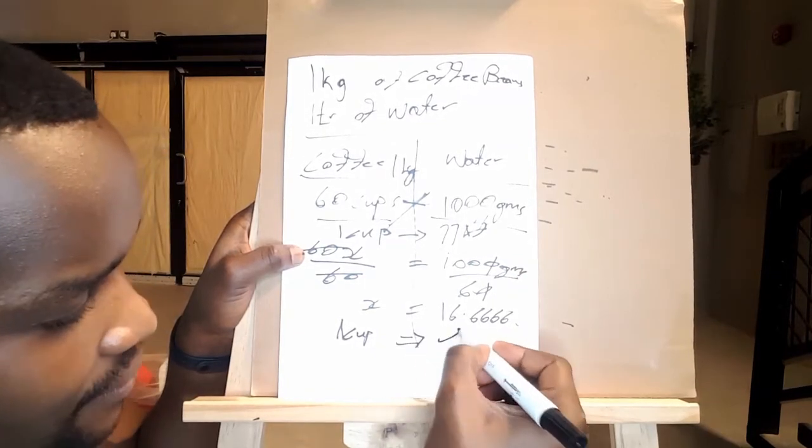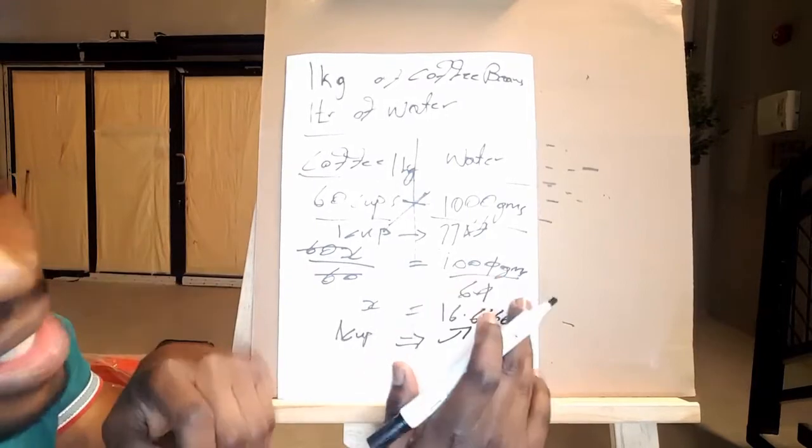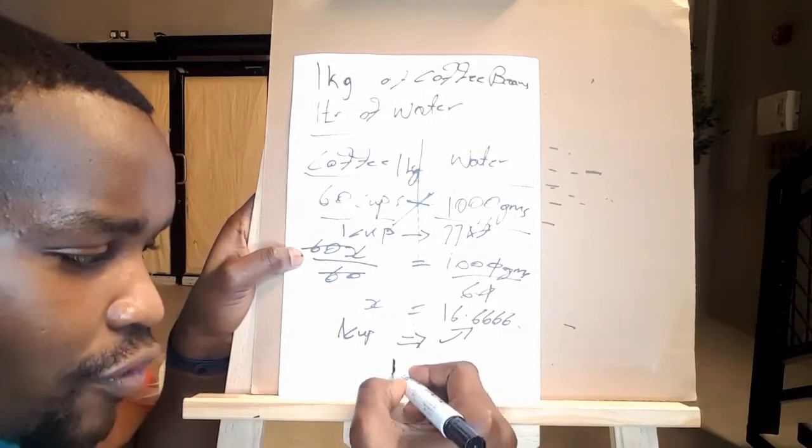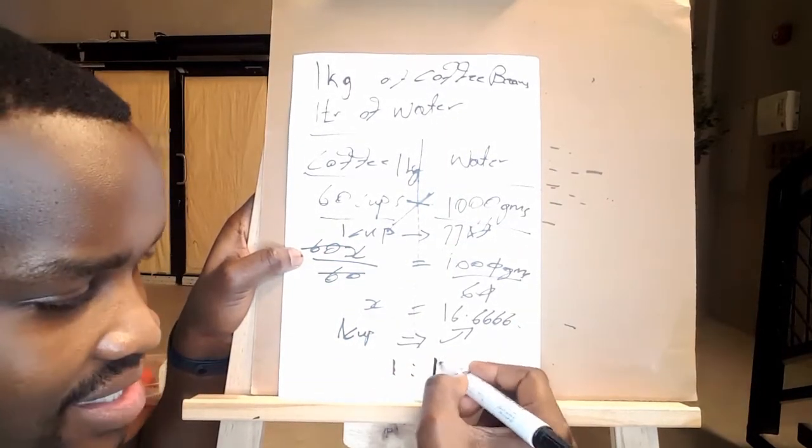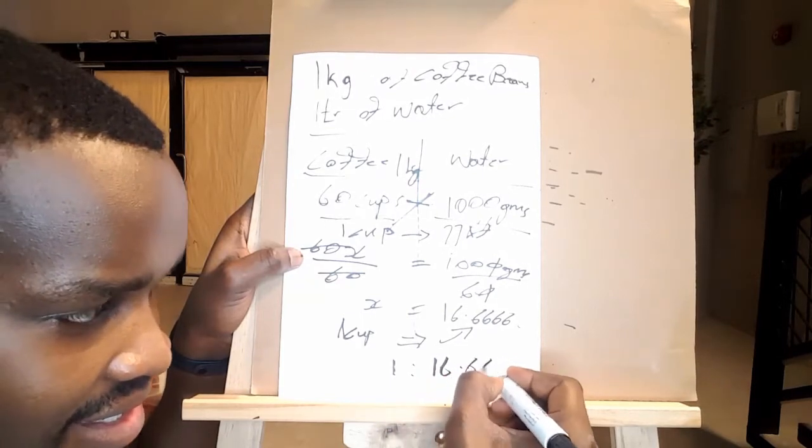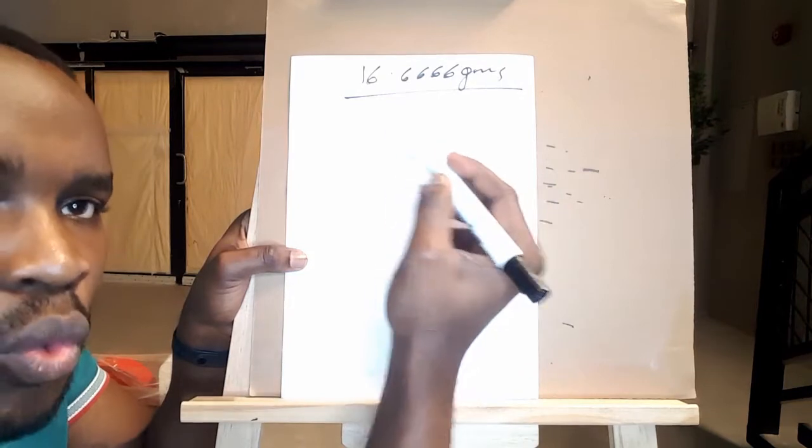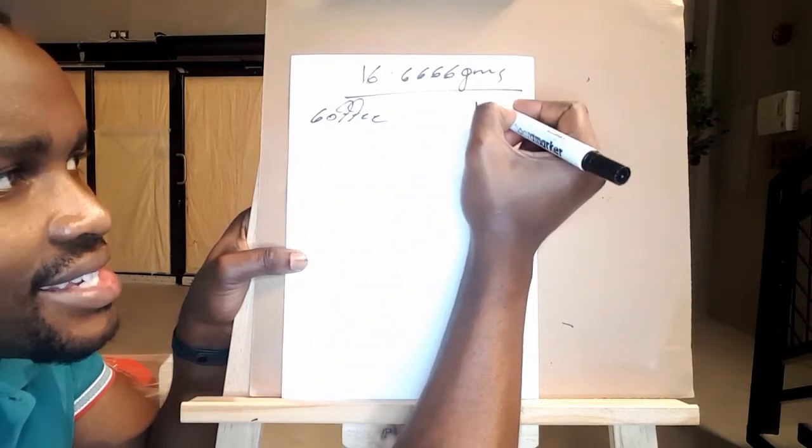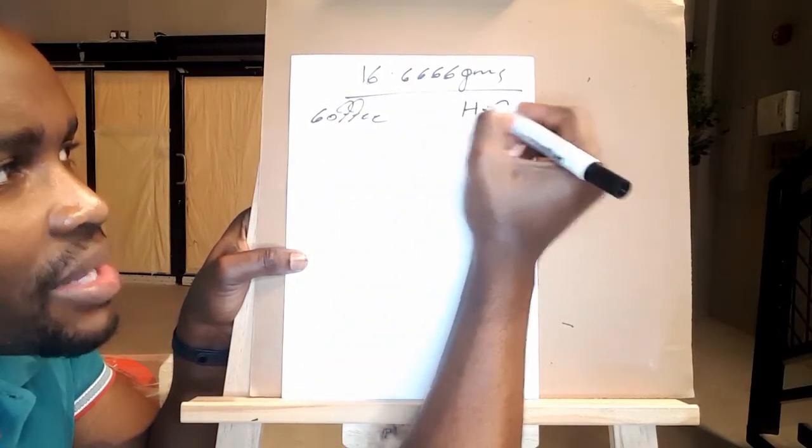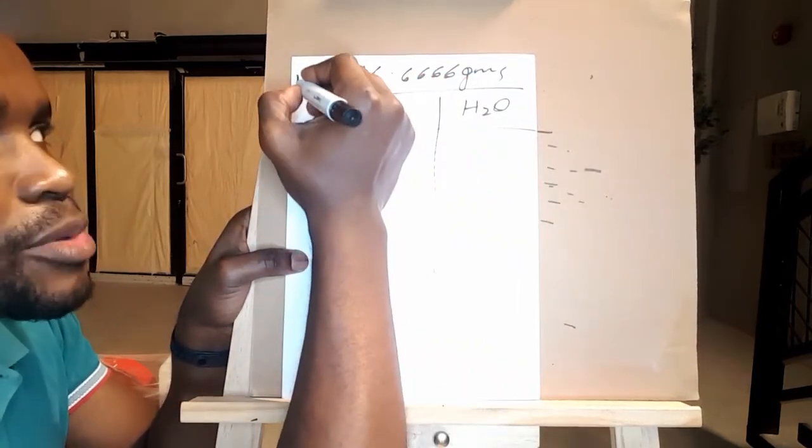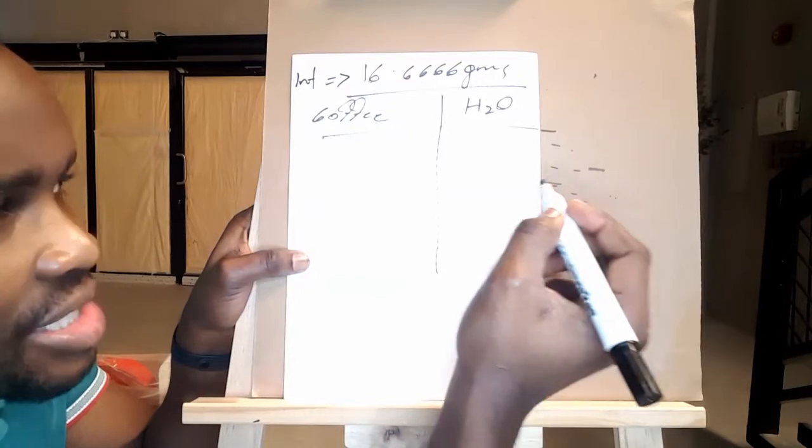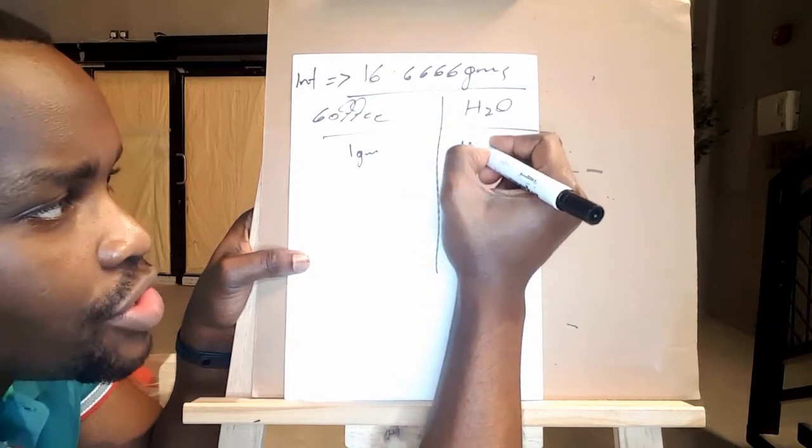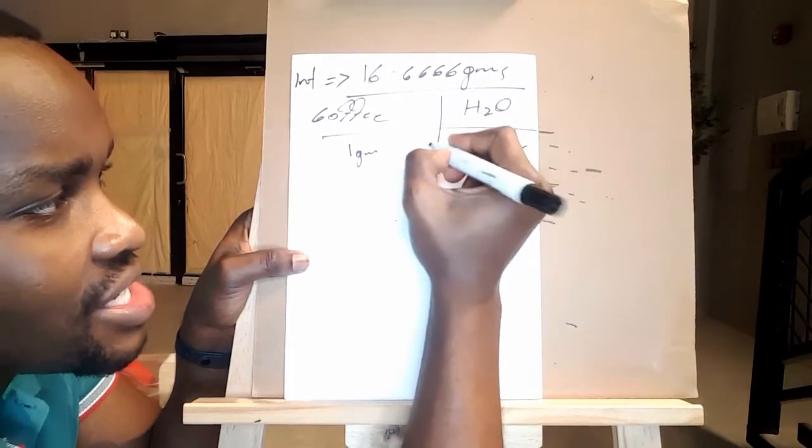So basically to brew one cup of coffee out of the 1000 grams, one needs 16.6666. So the 16.6666 is our intermediate number between the coffee and water. So this becomes a ratio of one. One cup is equivalent to 16.6666. If I have one gram of coffee, this is our coffee and this is our water. Remember this is our intermediate now. The 16.6666 is our intermediate. So that means if I have one gram of coffee, it is equivalent to the ratio of 16.6666. So this is the ratio.